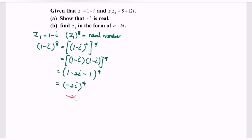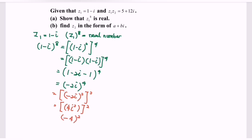Rewrite as (negative 2i) squared, all squared. As we know, i squared is negative 1. So the answer would be negative 4, to the power of 2. Finally, z sub 1 to the power of 8 is equal to 16. We have now shown that z sub 1 to the power of 8 is a real number.